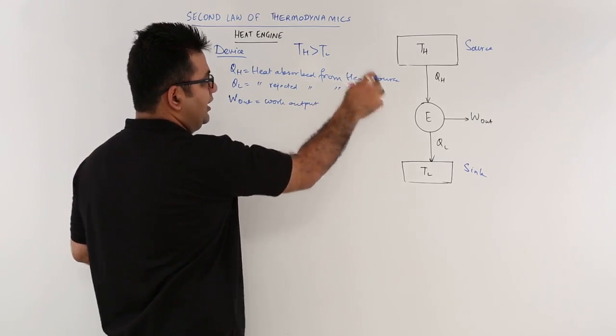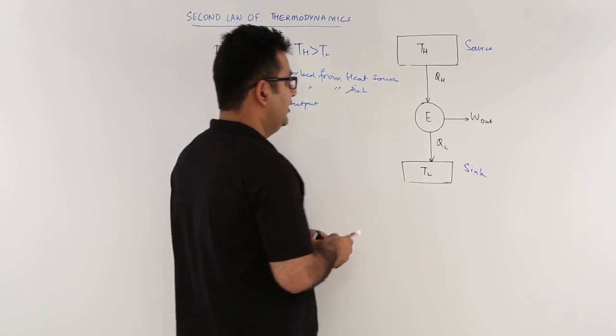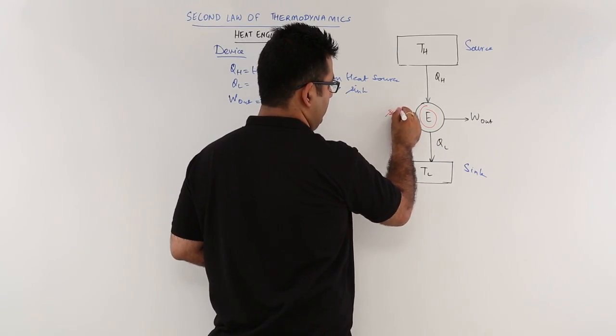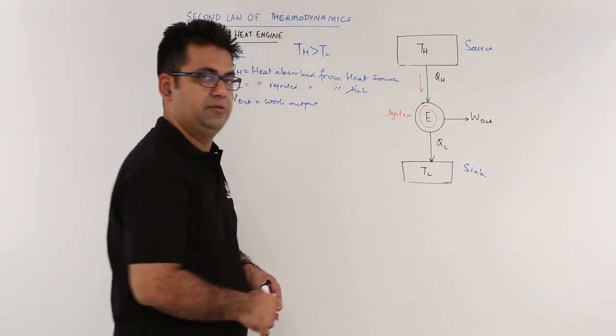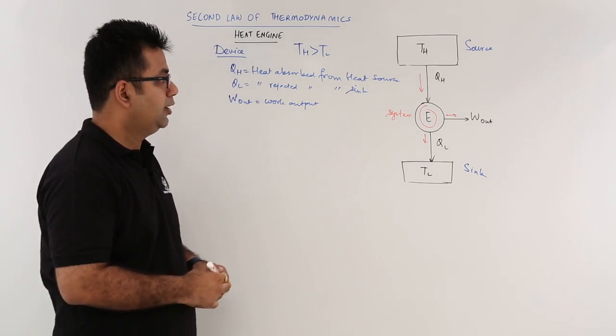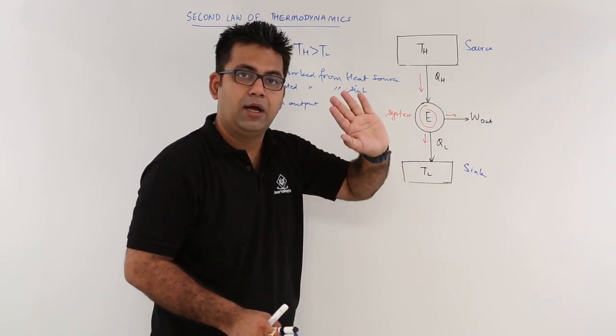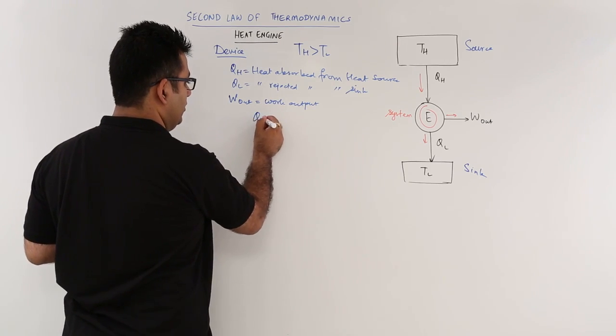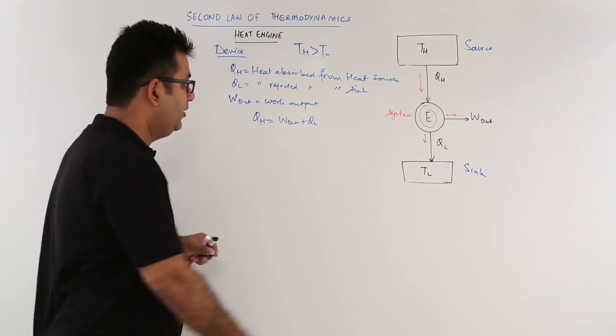So if you get the relationship between these three quantities QH, QL, and Wout, look at this. This is the system that we will be discussing about. You have something coming into the system, so this is input to the system, and there are two things which are going out. This is going out and this is going out. So to maintain the energy balance of the system, the input energy should be equal to the outgoing energy. So you will be equating QH is equal to Wout plus QL.